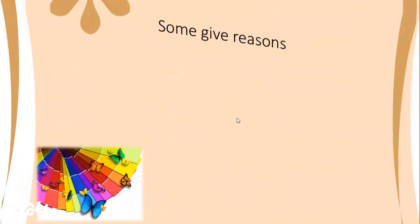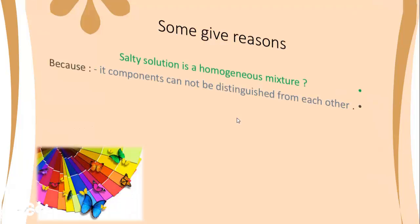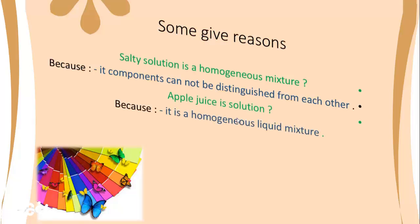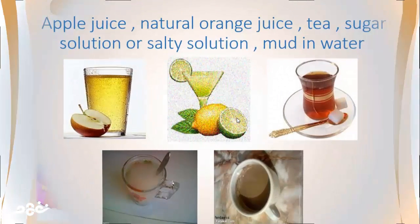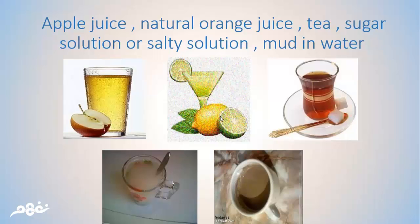Give reasons: a solution is a homogeneous mixture because its components cannot be distinguished from each other. Apple juice is a solution because it is a homogeneous liquid mixture. Examples of solutions include natural orange juice, apple juice, tea, sugary solution, salty solution. Mud in water is an example of a heterogeneous mixture.